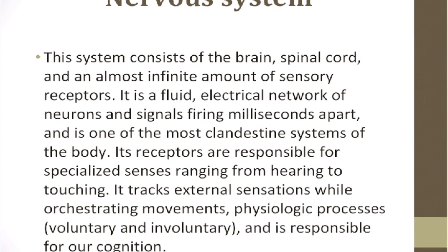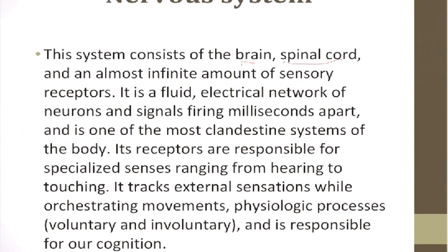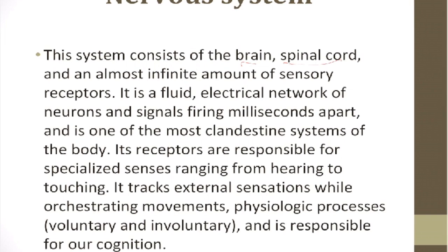The nervous system consists of the brain, spinal cord, and an almost infinite amount of sensory receptors. It is a fluid electrical network of neurons and signals firing milliseconds apart and is one of the most complex systems of the body. Its receptors are responsible for specialized senses ranging from hearing to touching. It tracks external sensations while orchestrating movement, physiological processes — both voluntary and involuntary — and is responsible for our cognition. The brain, spinal cord, and sensory receptors are the key components to know.